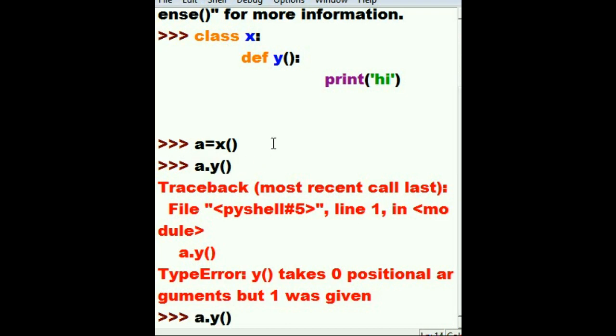When we keyed in a dot Y open close parens just before you hit enter, invisibly this instantiated object a went and invisibly put his name right in there like so. It was invisible. Nobody saw it. And when we hit enter it jumped up here to class X and went looking for Y, found Y, and took this A and put him right in there and says oh why doesn't take any arguments? What are you doing?